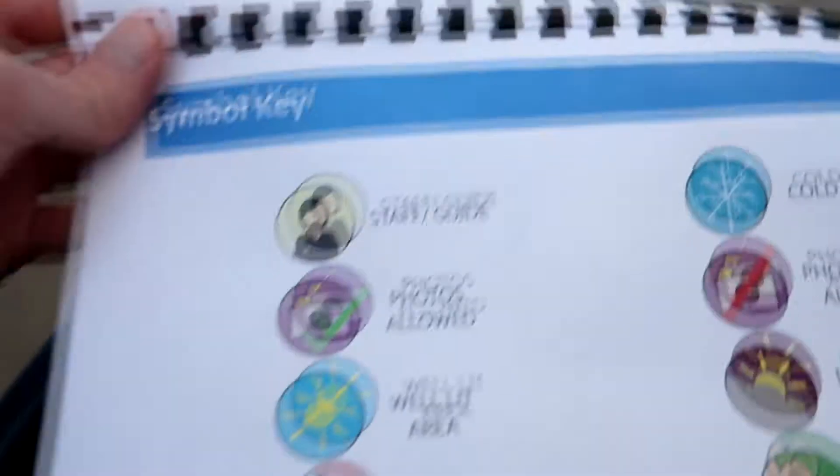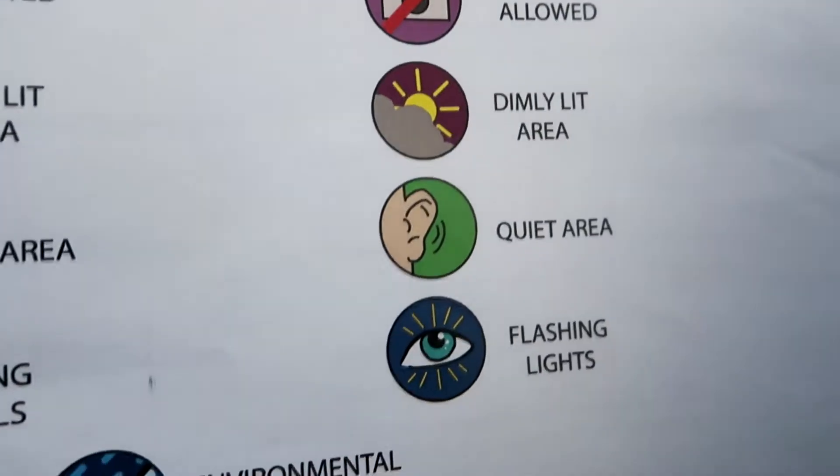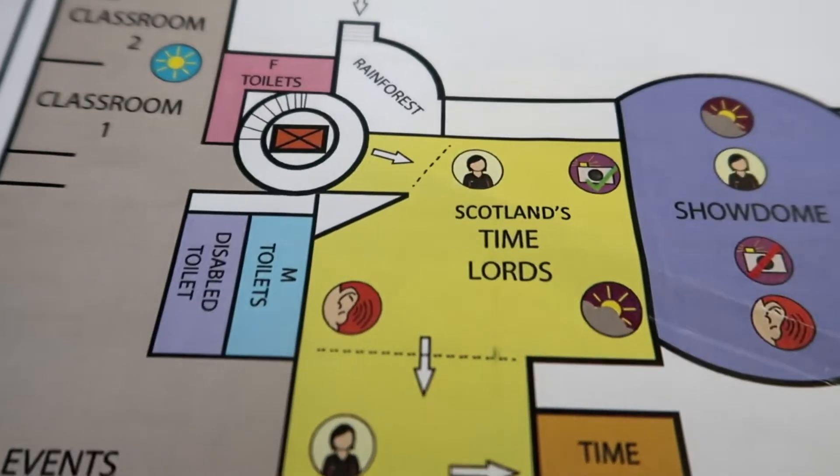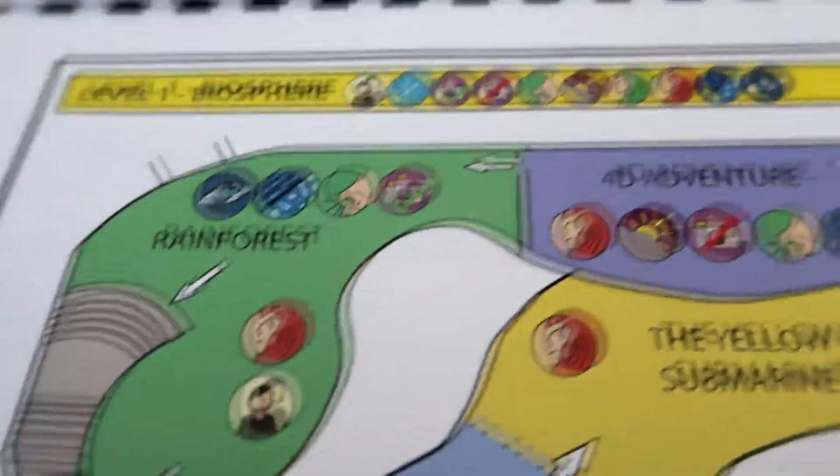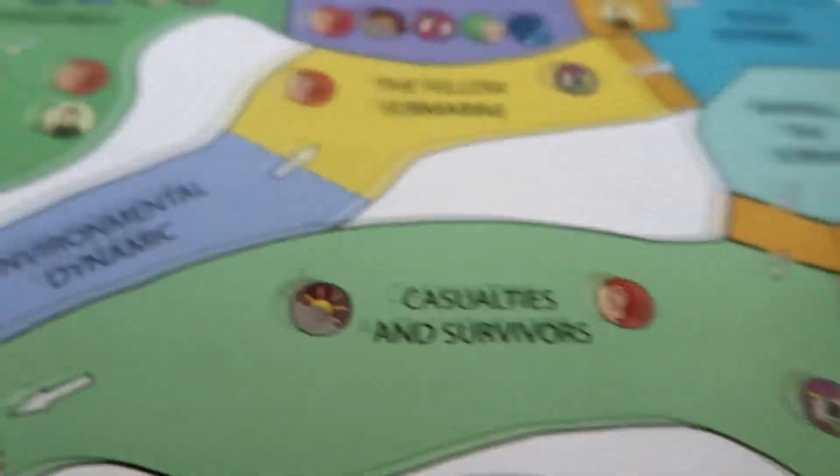One of the things I found out during my tour is that they've got a sensory guide. This basically means that if you or someone you're going with has any sensory issues, this guide will let you know about areas that have low sensory impact and areas which could cause problems. It's a guide to what the various symbols mean, showing the different areas — the entrance, the show dome, the gift shop, the rainforest and all the different areas. I think it's really cool that they've got something like this.